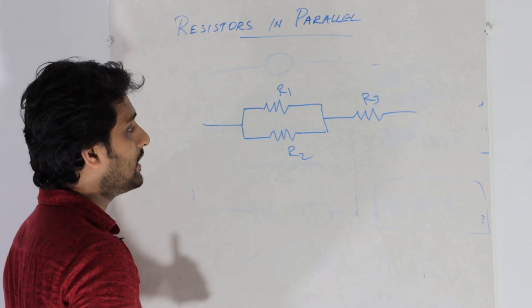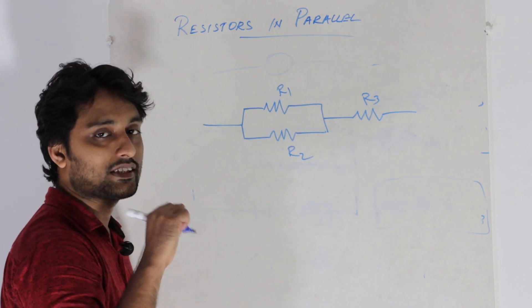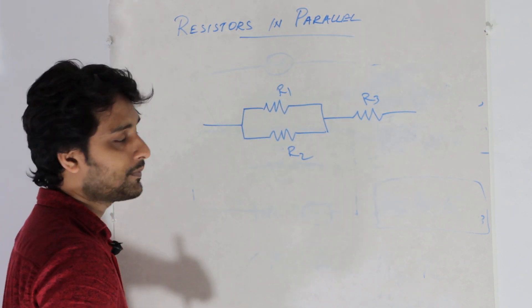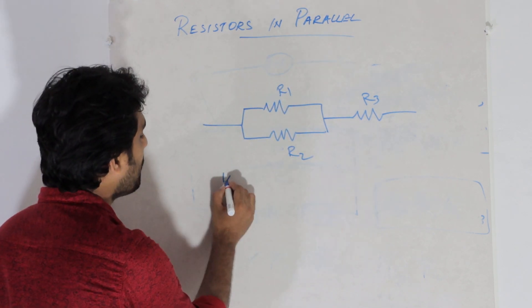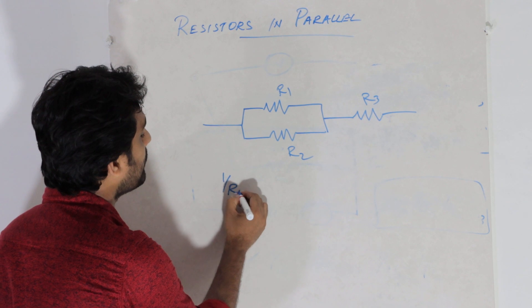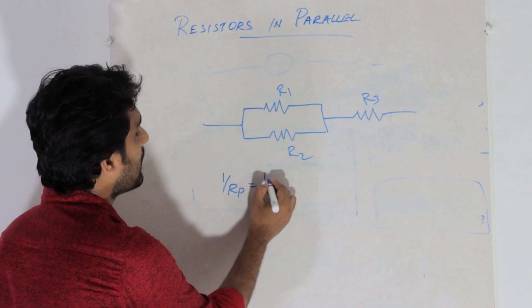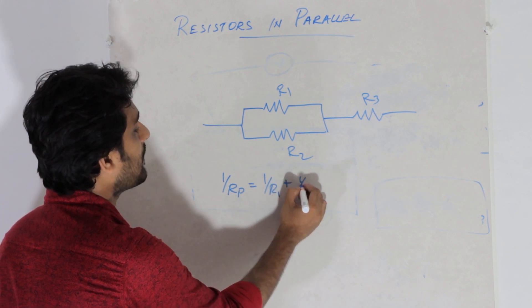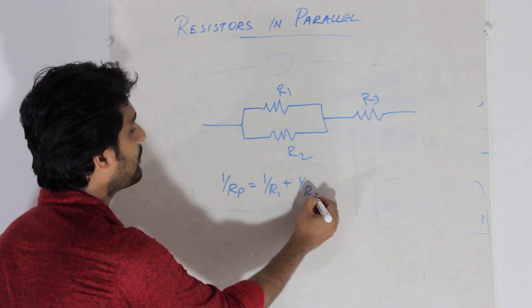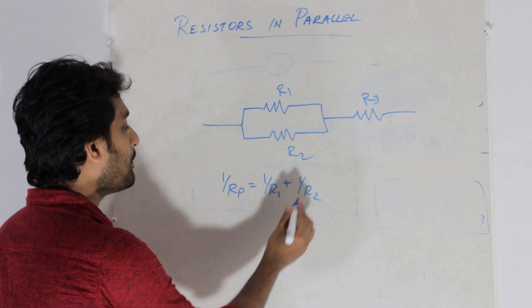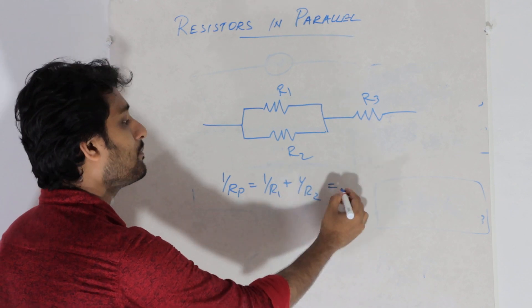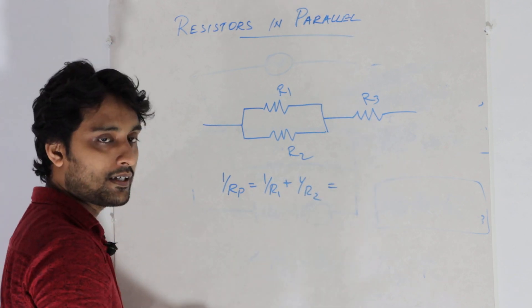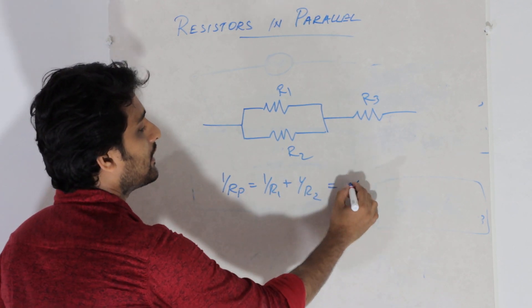Then 1 by Rp is equal to 1 by R1 plus 1 by R2. Now Rp is equal to R1 over 2. This is the answer.